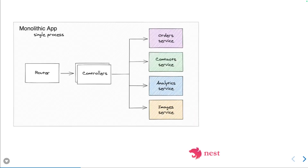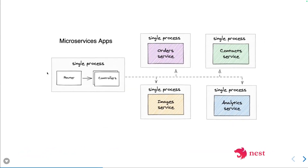They are tightly coupled because you might be using a single database for managing contacts, orders, analytics, and image services. The better approach is to divide into a single front-end gateway interface as one service, with the gateway delegating requests to specific independent loosely coupled services. If the order service goes down, it does not impact the analytics, image, contact, or any other service.